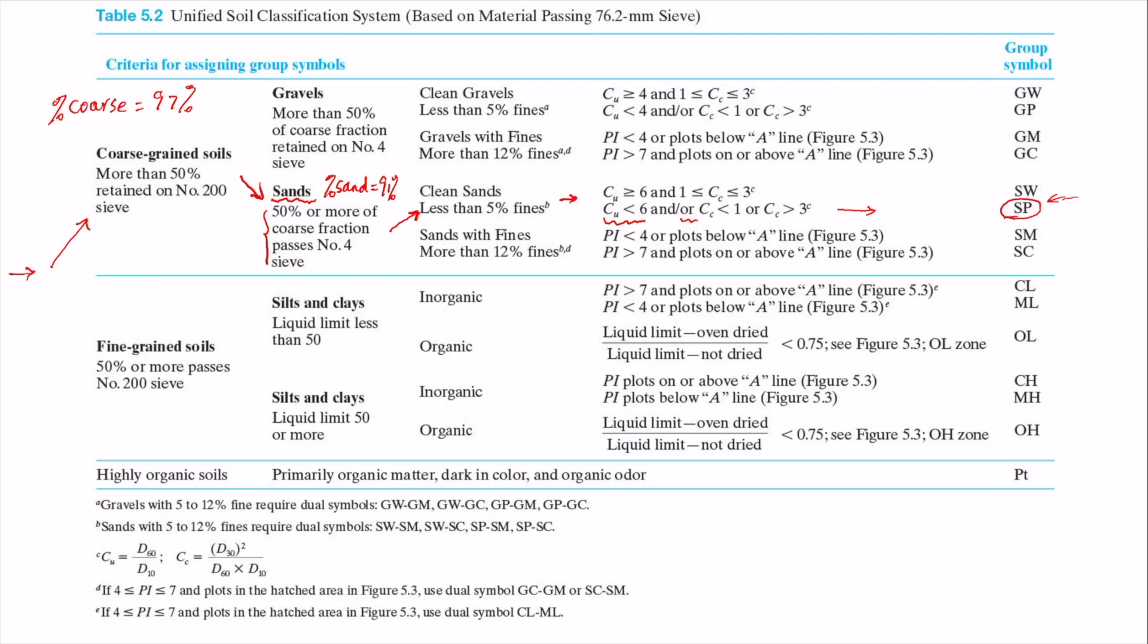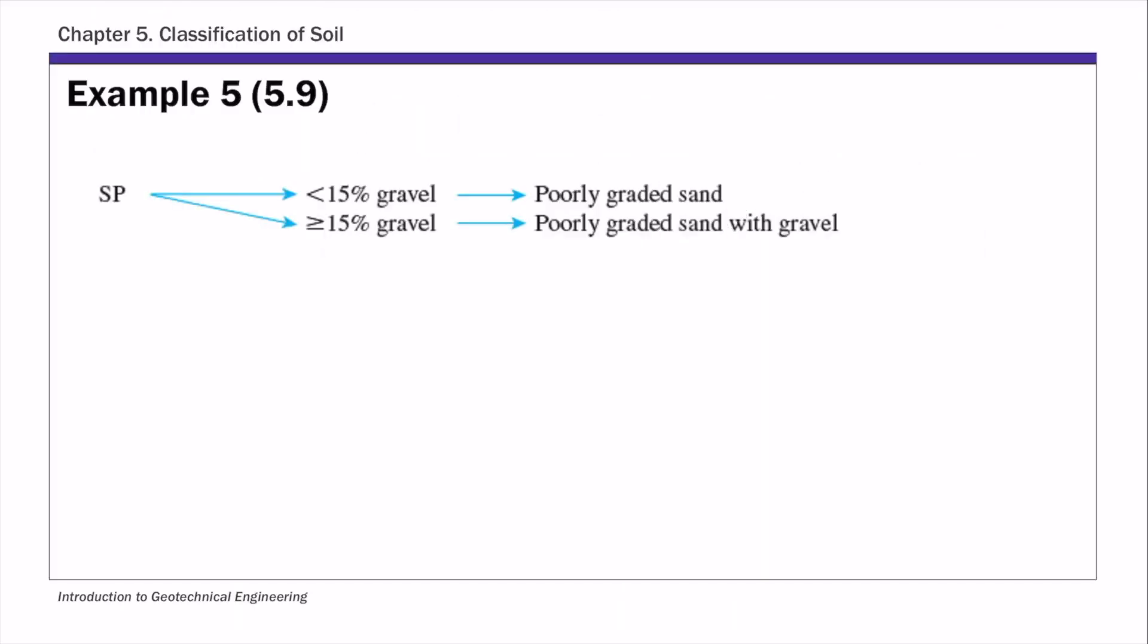Once we have the group symbol, then for group name we're going to use this group name figure, part of figure 5.4. We start from SP, the group symbol we just found. Percent gravel for this soil is 6 percent, so it's less than 15 percent. So the group name is simply poorly graded sand. So that's the complete classification - group symbol SP, and group name is poorly graded sand.